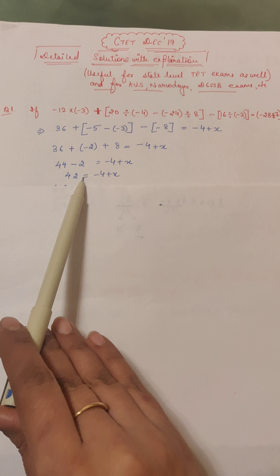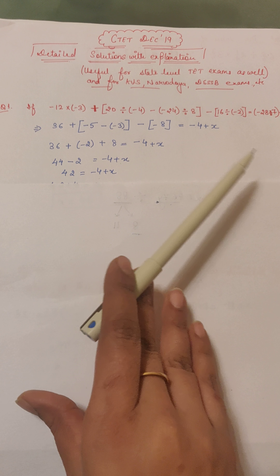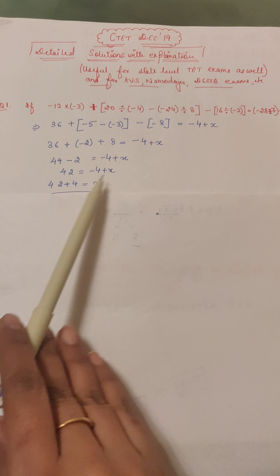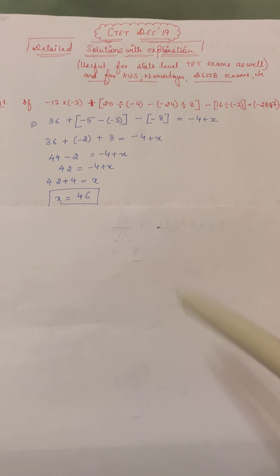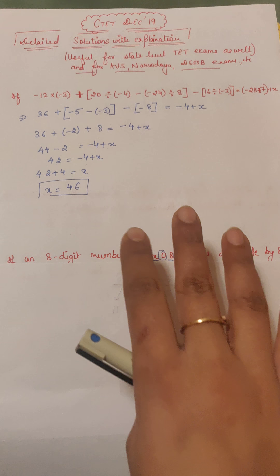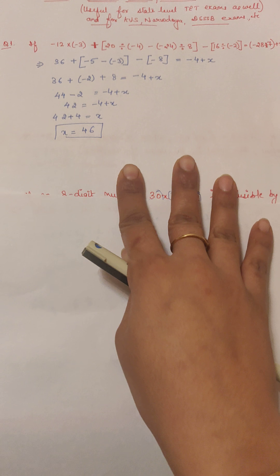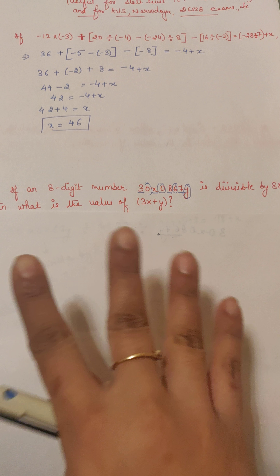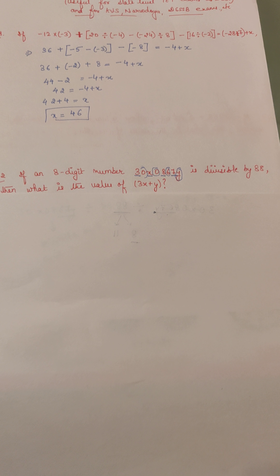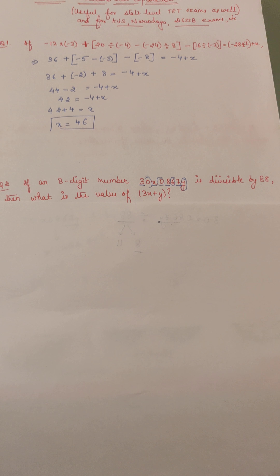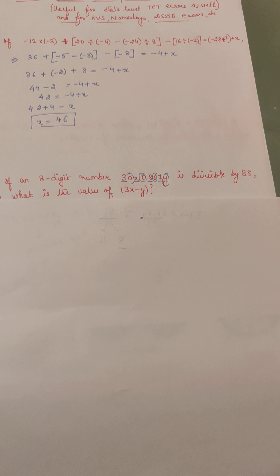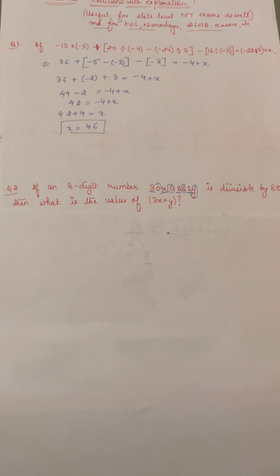Then 36 plus 8 is 44, minus 2 equals minus 4 plus X. So 44 minus 2 is 42, equal to minus 4 plus X. Bringing minus 4 to the other side: 42 plus 4 gives 46. So our answer is X equals 46. This is the first question from the exam — the correct answer is 46. You just need to apply the BODMAS rule; it's a simple question.